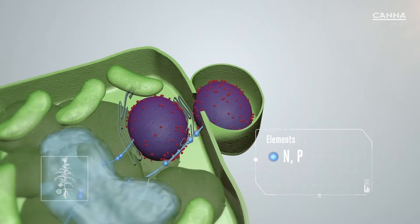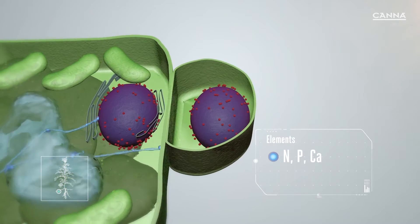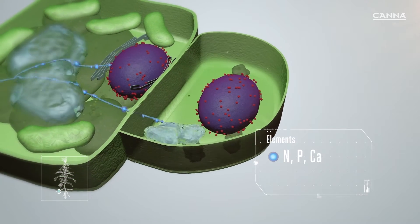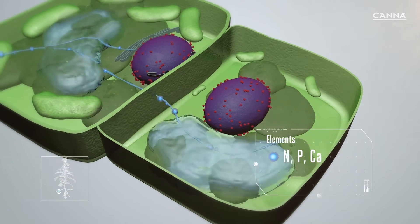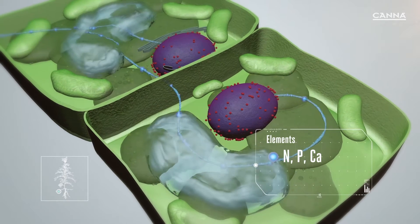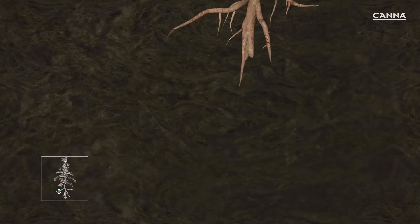Nitrogen, phosphorus and calcium enter the cell, making it grow. Nitrogen acts as the building blocks, while phosphorus and calcium make up the cement that binds these blocks together.